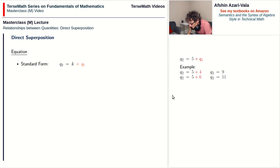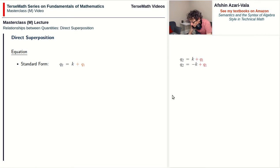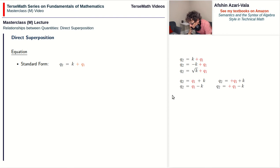In this equation, k can take any form. The key is that we are adding q1. So k could be negative k — it's still a constant. If k is 2, negative k will be negative 2, and it's still a constant. It could be root k. We could write q1 first. We could have q1 minus k — this is still direct superposition because q1 is being added. We could have q1 plus root k, and we still have a direct superposition relationship between q2 and q1.